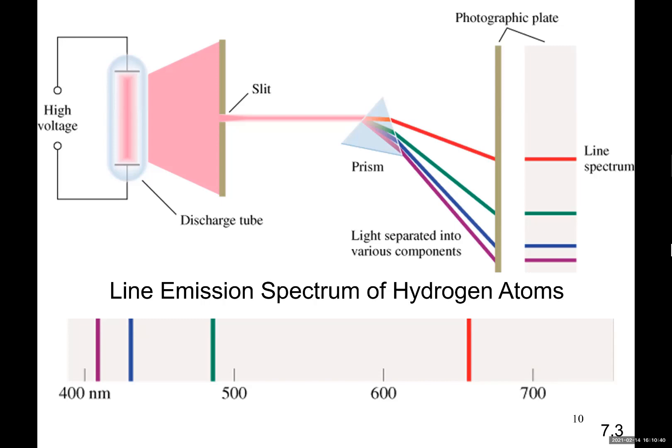When scientists took a hydrogen lamp, which is simply an evacuated sealed tubing filled with hydrogen, when they applied high voltage, they saw this red color.